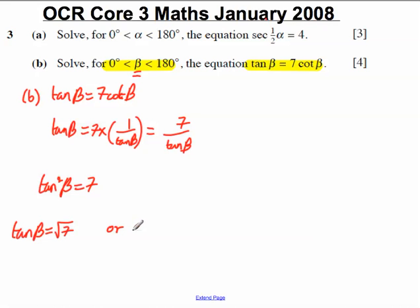Or, do not forget when taking square roots, there is a positive and negative answer. On the other hand, tan beta could equal the negative square root of 7. You must remember this potential solution or you will drop marks. When taking square roots of both sides of an equation, there is a positive answer and a negative answer.